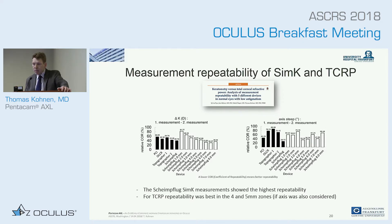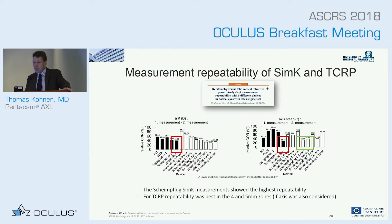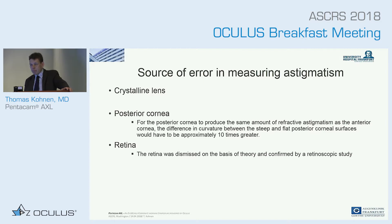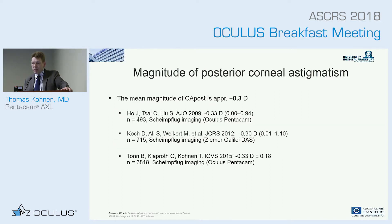There are sources of error in measuring astigmatism, and one is the posterior cornea. Looking at the literature over time — the Koch group and Ho — we all found that the mean magnitude of posterior corneal astigmatism is approximately 0.3 diopters.